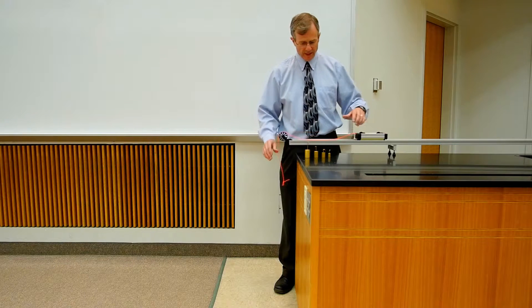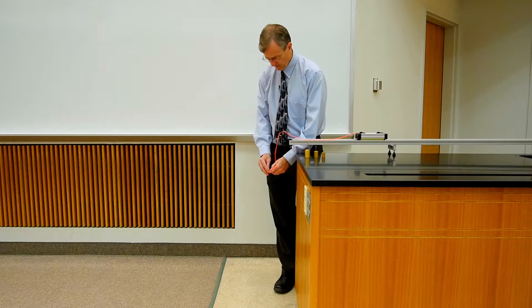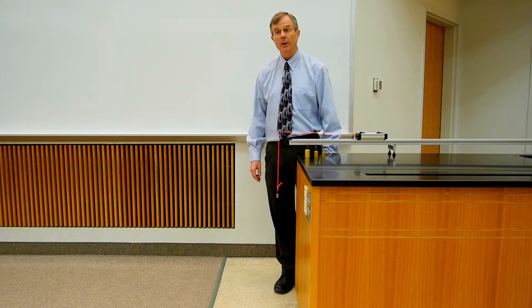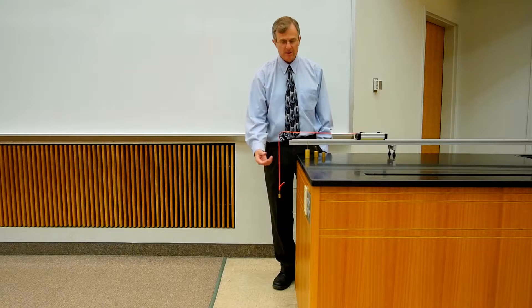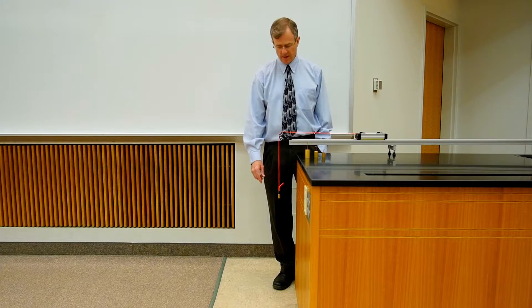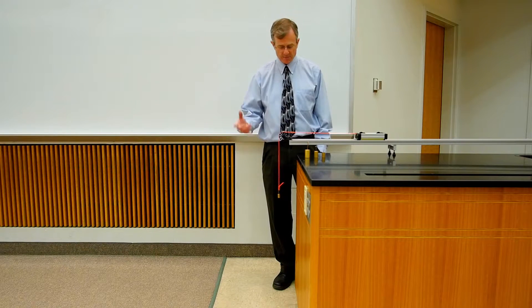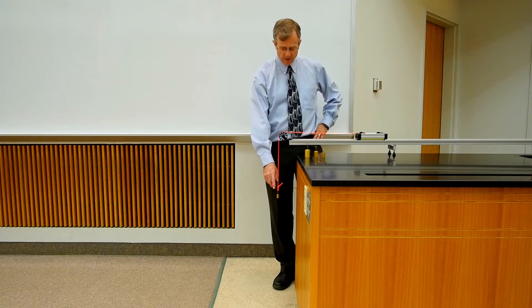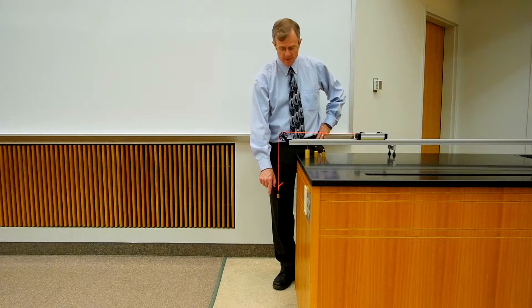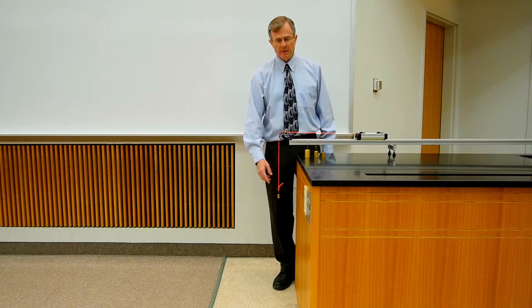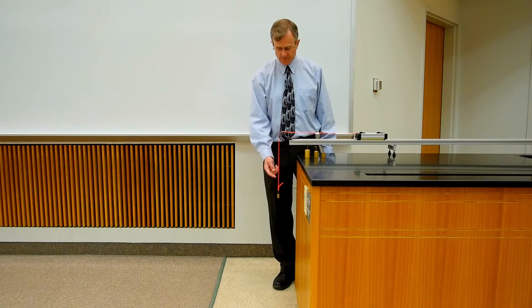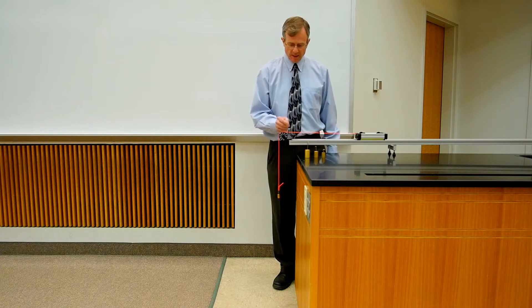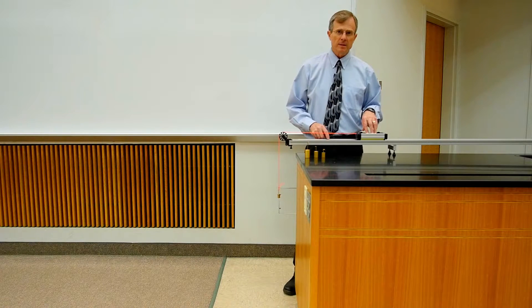If you hang a mass on the end of this string — this is a 20 gram mass — the force of gravity acting on this mass is its mass, 20 grams, times the acceleration of gravity, 9.8 meters per second squared. Convert grams to kilograms, multiply by 9.8, and it gives you the force of gravity acting down on this mass. Because the string is stationary and this mass is not accelerating, the tension that pulls up on the mass must equal its own weight pulling it down. So that tension — we can work it out, multiply the numbers — and the tension translates over into a tension force on this cart.